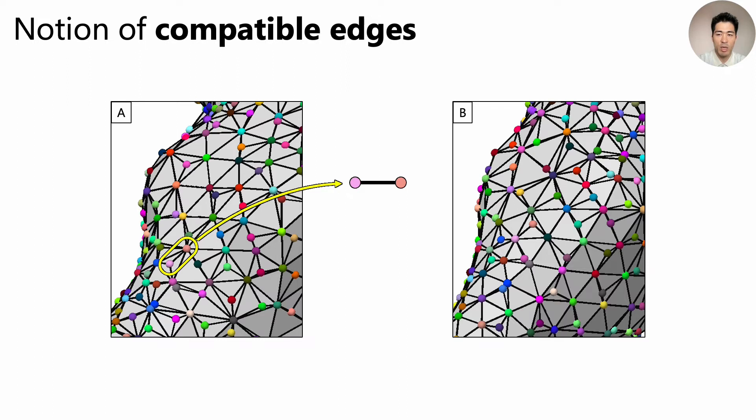Then let's look at edges. For example, this edge on A connects these two vertices. If we look for the same pair of vertices in B, we see that there is an edge connecting them. So we call this edge compatible, and assign a random color to it representing its ID.